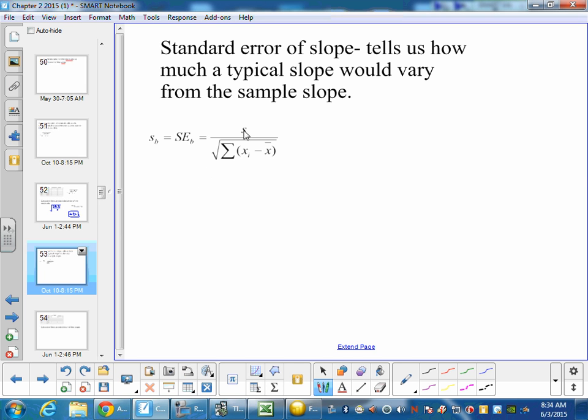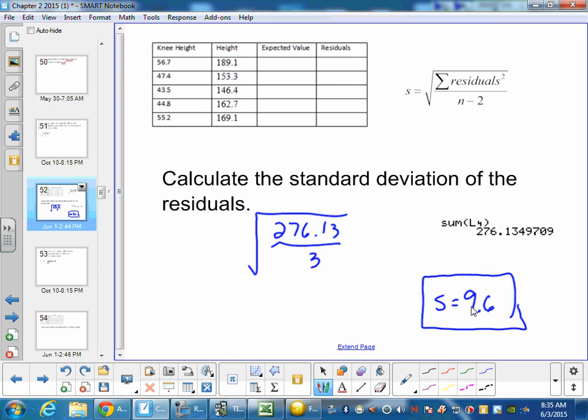And what they do is they take the s, which is the standard deviation for the residuals, and divide it by the square root of the sum of x minus x bar. This is a little bit more complicated. Now to go through this, you would take our s value here, 9.6,